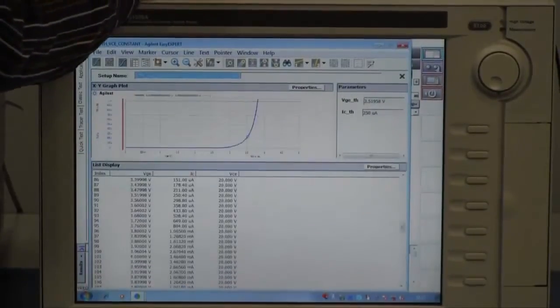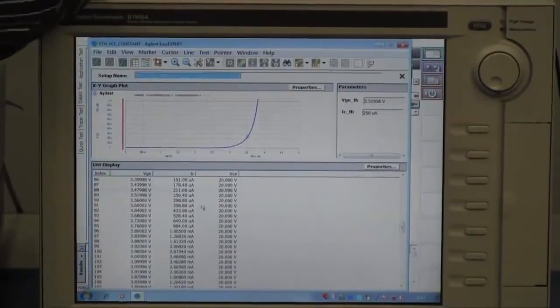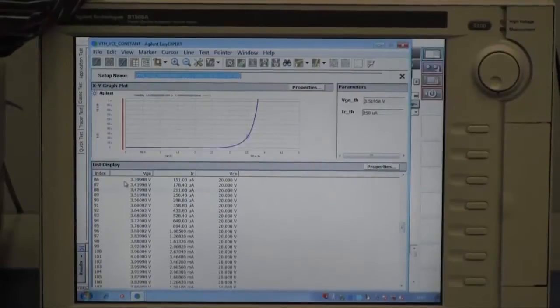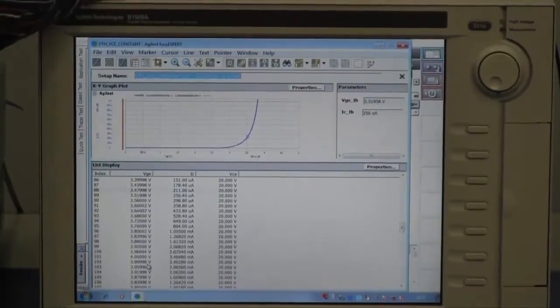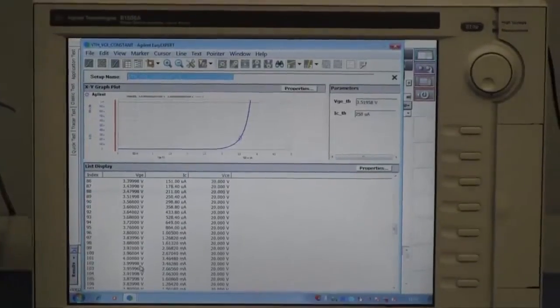Please see the list. Collector emitter voltage is constant and VGE is swept from 0 to 4 voltage. This is the one measurement.